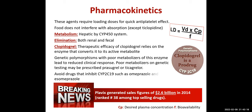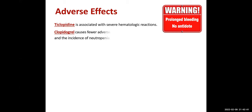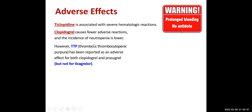We look at the clinical response rather than doing genetic testing in practice. Avoid drugs that inhibit CYP2C19, such as omeprazole and esomeprazole. Adverse effects: all of these drugs prolong bleeding time and can cause bleeding. Clopidogrel causes fewer adverse reactions and lower incidence of neutropenia. However, thrombotic thrombocytopenic purpura has been reported for both clopidogrel and prasugrel but not for ticagrelor.